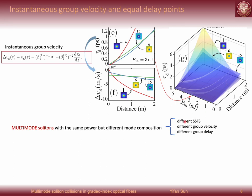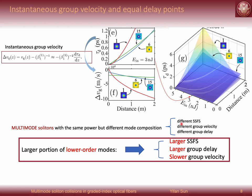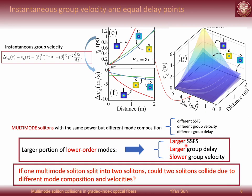And this is for the single-mode soliton cases. But we can reasonably infer that for multimode solitons with the same power but different mode composition could have different redshift, group velocity, and group delay. And in general, a soliton carrying the larger portion of low-order modes can have the larger redshift, larger group delay, and slower group velocity. So now we can ask such a realistic question related to these slides: if one multimode soliton splits into two solitons, could those two solitons collide due to the different mode composition and the group velocities?